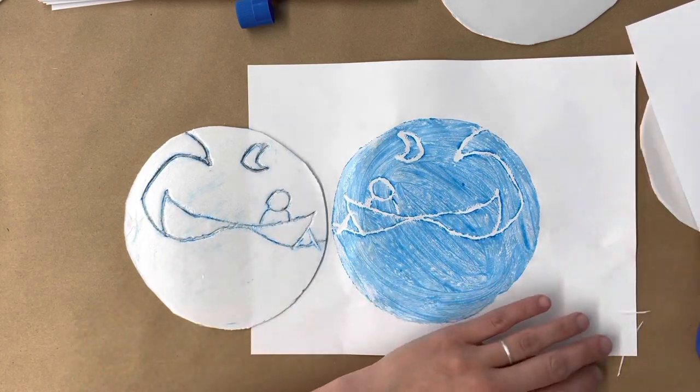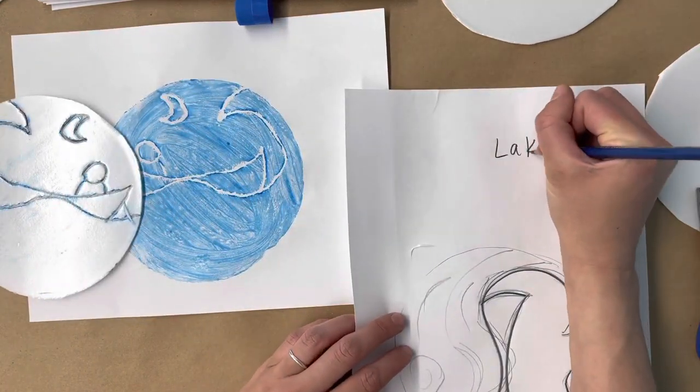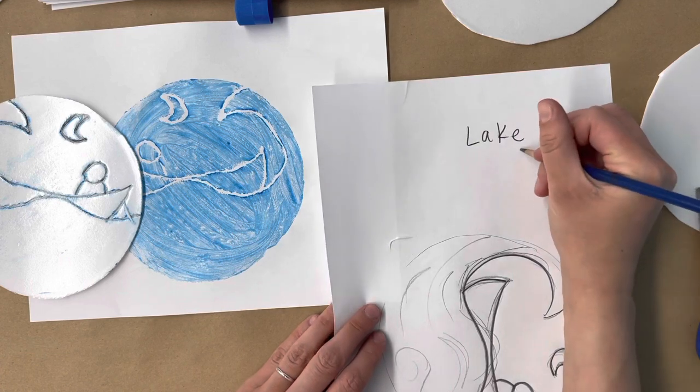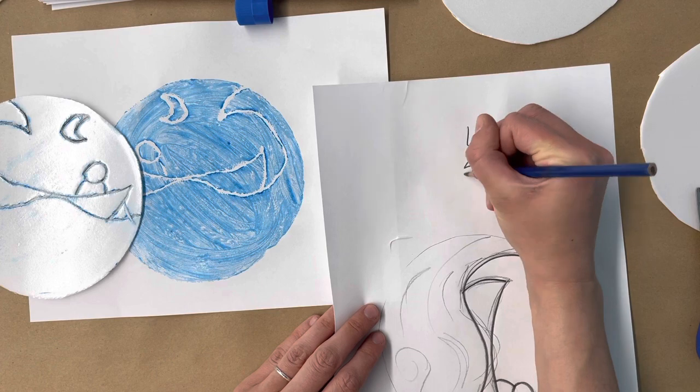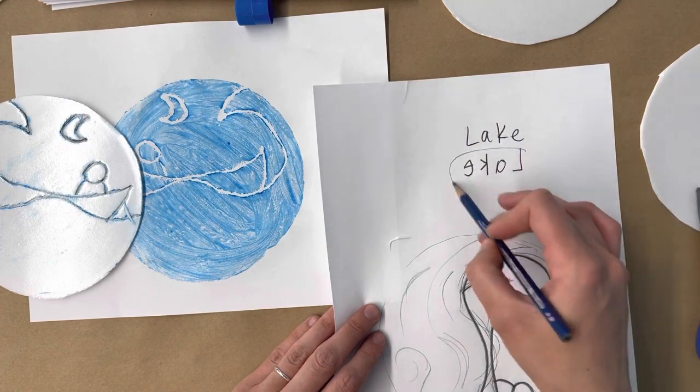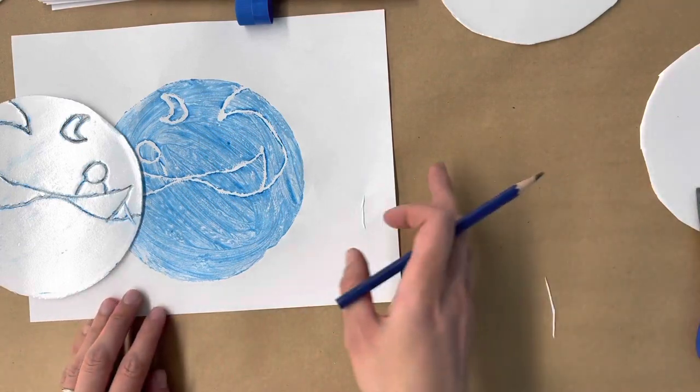But if you're using letters, if I wrote something right here, it would have printed backwards. This is something if you're going to be a printmaker, you have to learn that if you wanted to write 'lake,' you're going to have to write it mirrored as though it were in the mirror. You would have to write it like that for it to print like that. It can be a fun challenge.